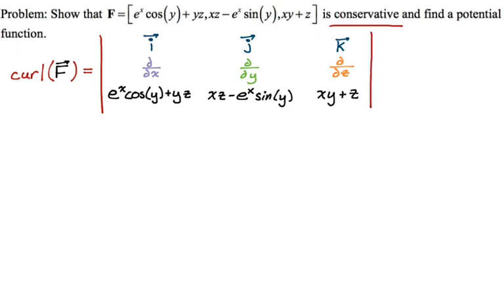Now we're going to calculate this. For the i component, we cross out the top row and the first column. We need a two-by-two determinant, which means I need the derivative with respect to y of this term, which is just x, minus the derivative with respect to z of this term, which is just x. That's good, because I need the curl to be zero — if I had gotten anything else here, I would have automatically known it's not conservative and could move on.